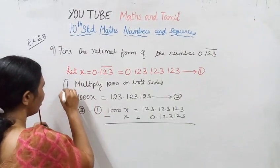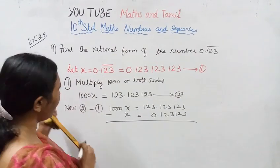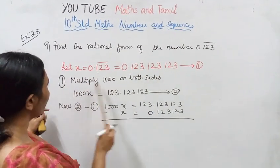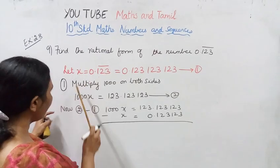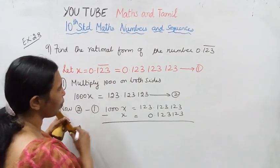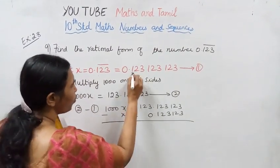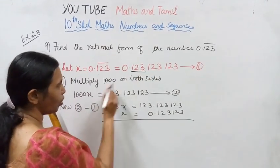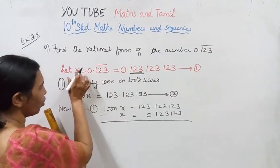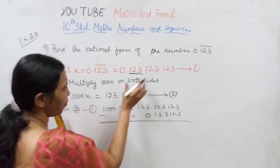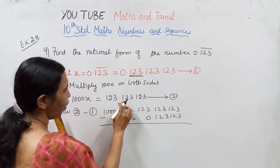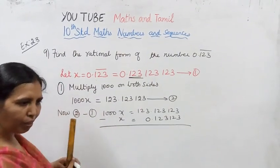Here 1000x equals 123.123 repeating. There are 3 decimal points — 1, 2, 3. The front line also has 1, 2, 3 digits. Multiplying 1000 on both sides gives 1000x equals 123.123...